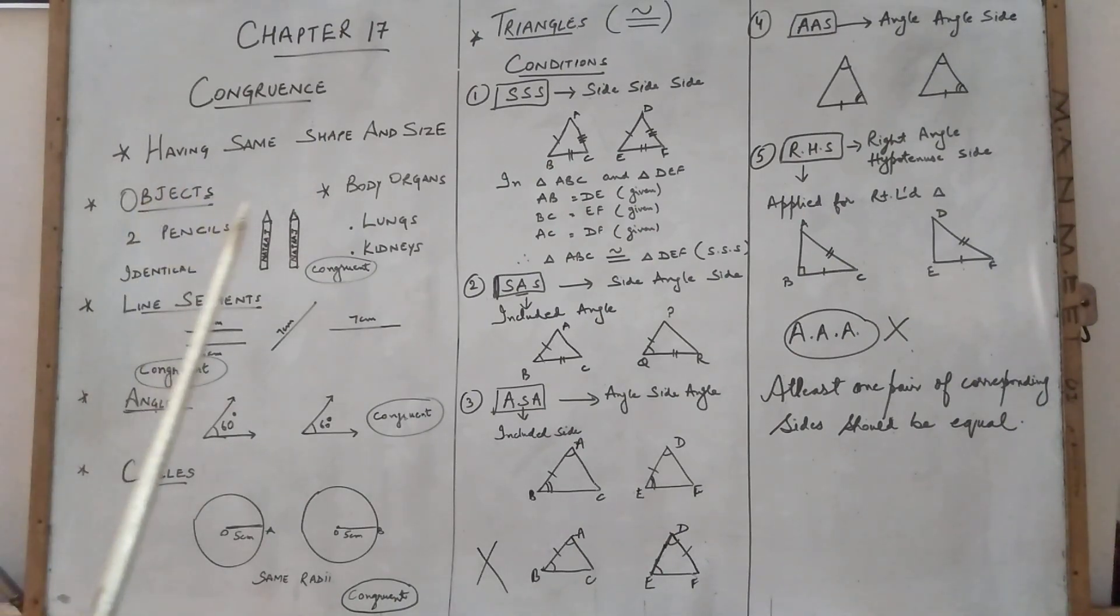I will take the object. Suppose I have taken two Natraj pencils. Both are identical, so both are congruent. If we take our body organs, we can take lungs congruent, kidneys congruent.